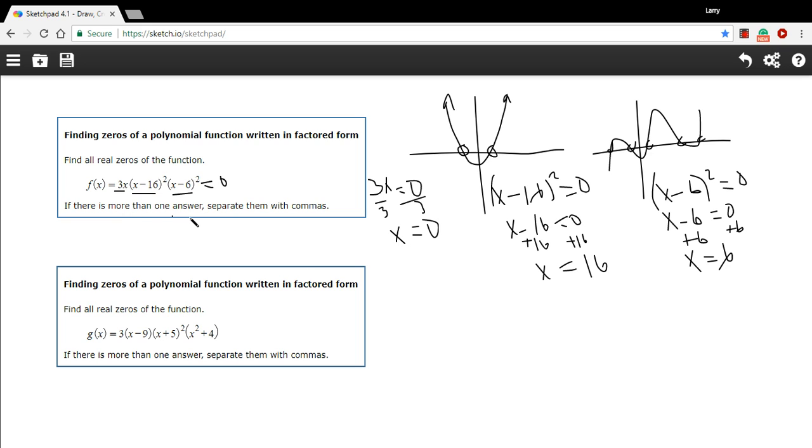And the problem, it says, if there's more than one answer, separate them with commas. So we would probably write it like this, x equals zero, comma, six, comma, 16, and just list them in ascending order like that.